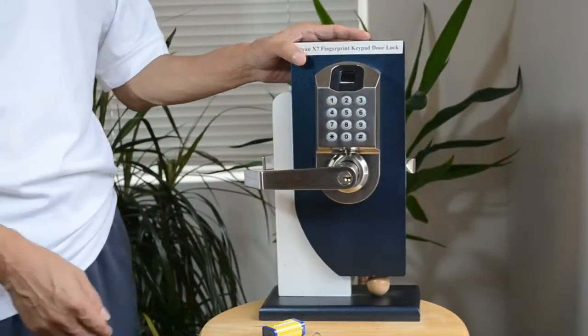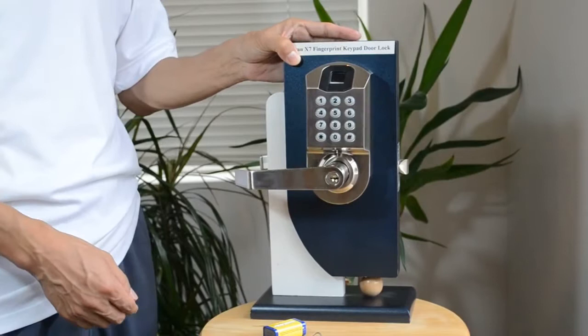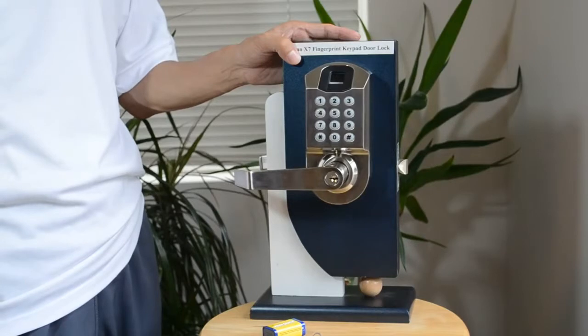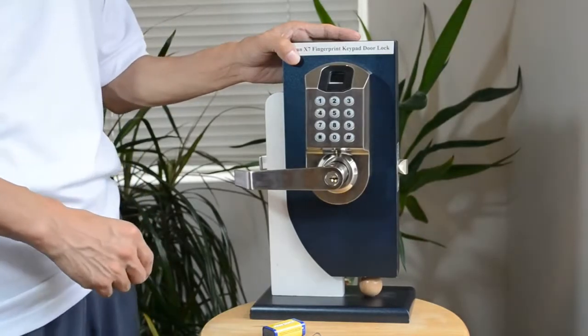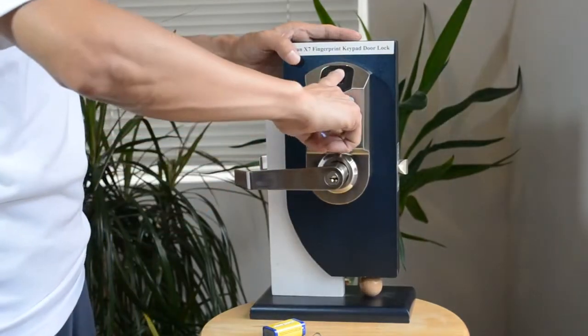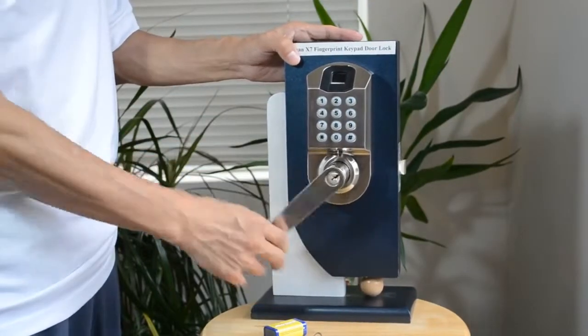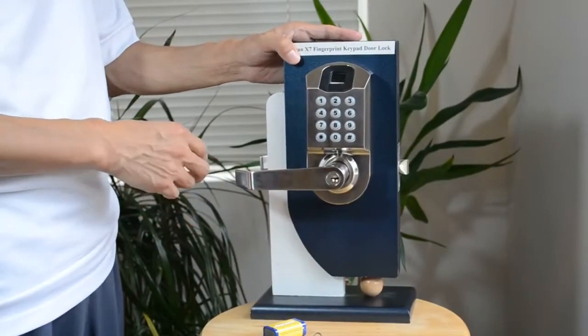Let me introduce to you the new biometric fingerprint keypad lock, the Sinex X7. There are three ways to unlock. The first way is by using your fingerprint. Just touch the center and it will automatically unlock.